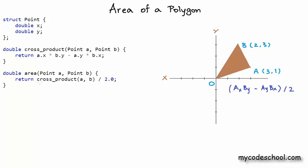We can now write the function to compute the area. So given the points A and B, this computes the area of the triangle OAB. We simply take the cross product and divide it by 2. If we apply the formula for these values of A and B, so A is 3,1 and B is 2,3, we get 3 into 3 minus 1 into 2, the whole divided by 2, which is equal to 3.5.